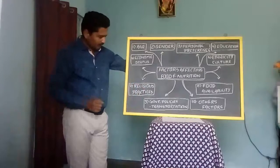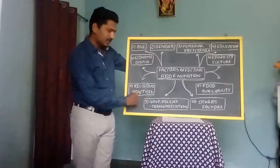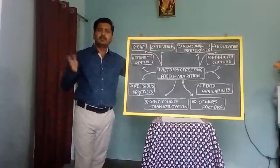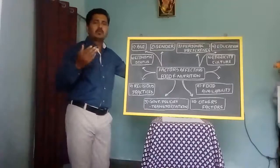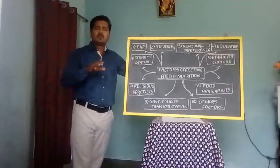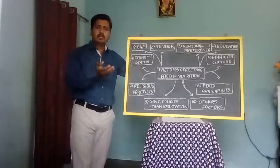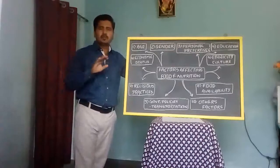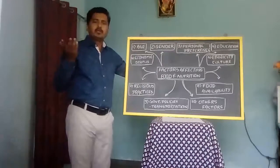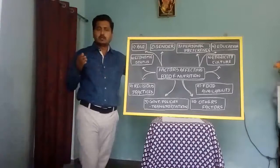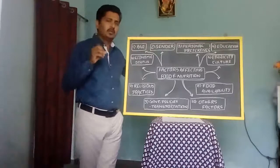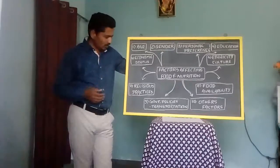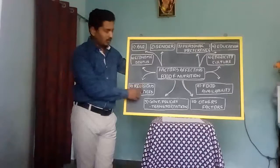The seventh factor is religious practices. As with culture, religion creates variation in food selection. Muslims generally avoid pork. Hindus generally avoid non-vegetarian food. Western and other countries show more preference for non-vegetarian and fatty food. This is how religion affects food selection and choice.